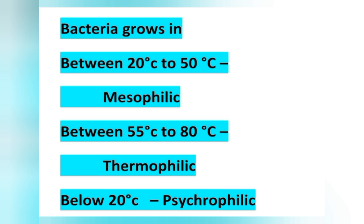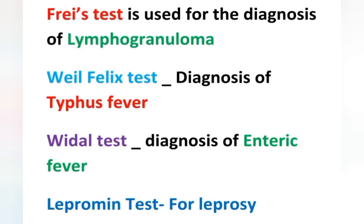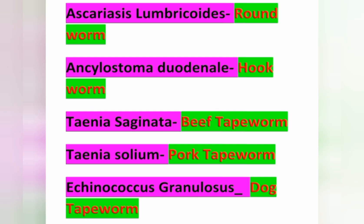Bacteria growing below 20°C are known as psychrophilic bacteria. The Frei test is used for the diagnosis of lymphogranuloma. The Weil-Felix test is used for the diagnosis of typhus fever. The Widal test is used for the diagnosis of enteric fever or typhoid fever. The Lepromin test is used for the diagnosis of leprosy.